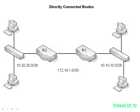Here's our diagram of the lab we're using for this video. We have two routers connected via a serial link, and each router is connected to a local area network. You can see the subnet ranges used for each section. For directly connected routes, we're talking about subnets on each of the router's interfaces.